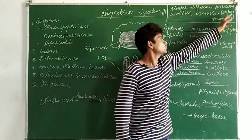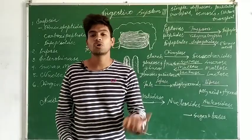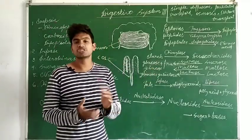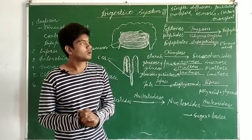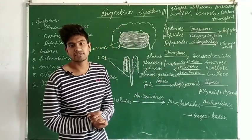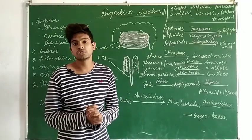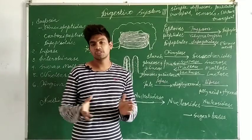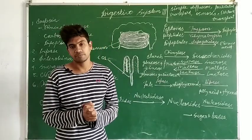The last method is active transport. Active transport occurs against the concentration gradient — it takes place from lower concentration to higher concentration. Through this method, some monosaccharides, some amino acids, and electrolytes like sodium ions are absorbed. In the next video we will end this topic. Thank you.